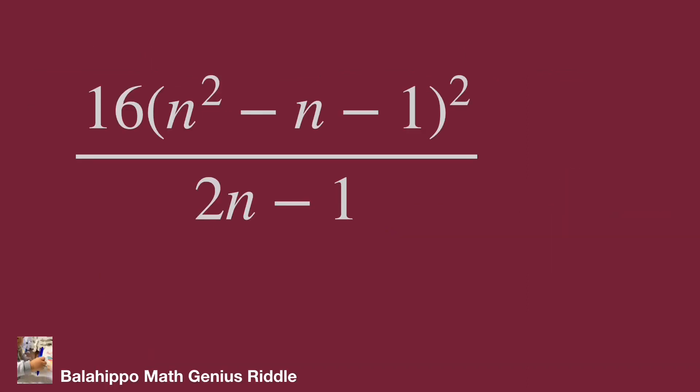The given information: 16 times quantity n squared minus n minus 1 squared over 2n minus 1 is integer. The numerator of this fraction has several items and is squared. I'll make an easy to understand equation. Let the fraction equal to m, and m is integer.